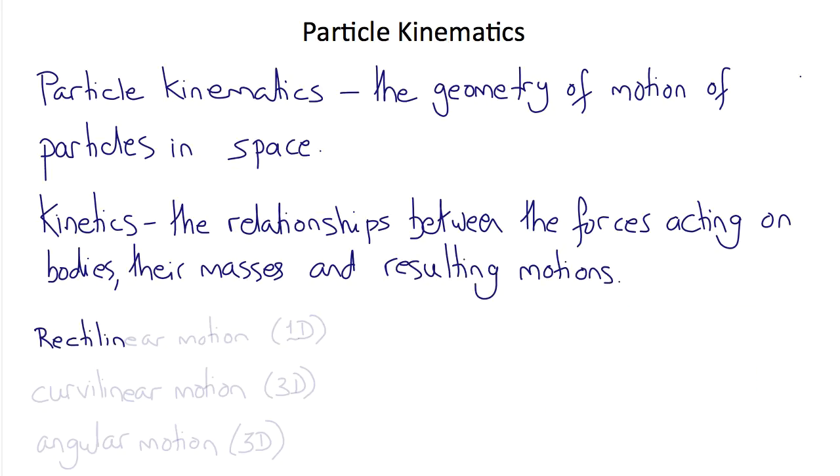We'll consider three types of motion. Rectilinear motion, which means motions in a straight line, or essentially one-dimensional motions. Curvilinear motion, which means motions in three-dimensional space. And angular motion, which are also curvilinear motions in three-dimensional space, but represented by radii and angles.